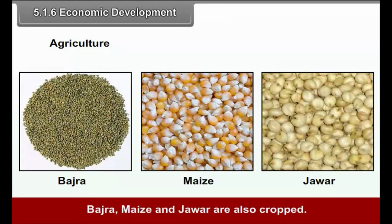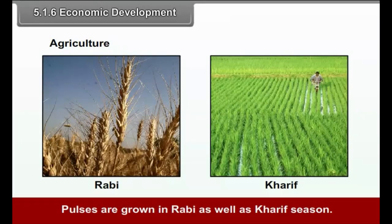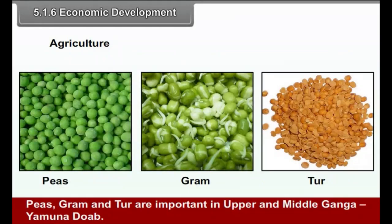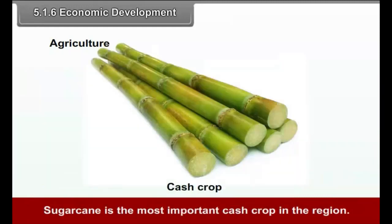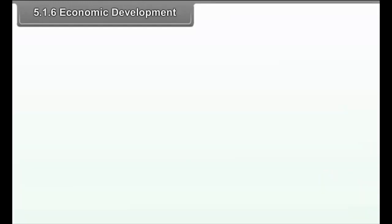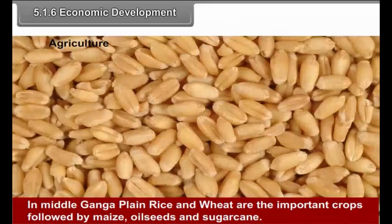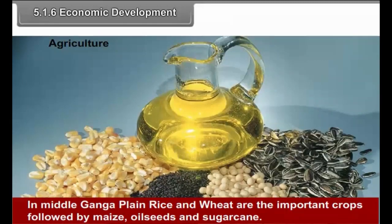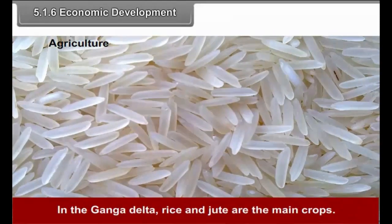Bajra, Maize and Jowar are also cropped. Pulses are grown in Rabi as well as Kharif seasons. Peas, Gram and Tur are important in the upper and middle Ganga-Yamuna region. Groundnut, sesame and mustard are dominant oilseeds in the plain. Sugarcane is the most important cash crop in the region. In the middle Ganga Plain, rice and wheat are the important crops followed by maize, oilseeds and sugarcane. In the Ganga Delta, rice and jute are the main crops. Other crops include sesame, mustard, groundnut, tobacco, etc.